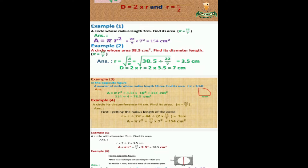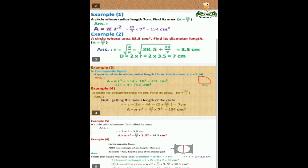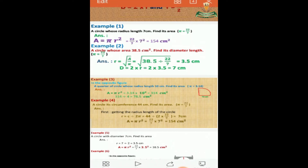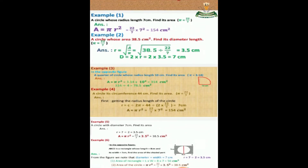We begin by finding the radius: radius equals the square root of A over π, equals the square root of 38.5 divided by 22 over 7, equals 3.5. The diameter equals 2 times the radius, so 2 times 3.5 equals 7 centimeters.